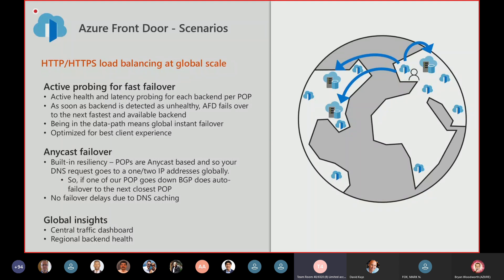One key issue with typical global load balancing systems is that they're DNS-based, meaning something can cache the DNS at any point. For example, Google Chrome caches DNS for about 1,000 seconds — equivalent to around 16 minutes. So even if your global load balancer has failed over to another DNS entry, Chrome keeps sending you to the same endpoint. ISPs can cache DNS for hours. That's a fundamental problem with DNS-based approaches.